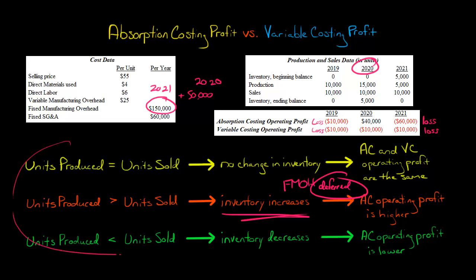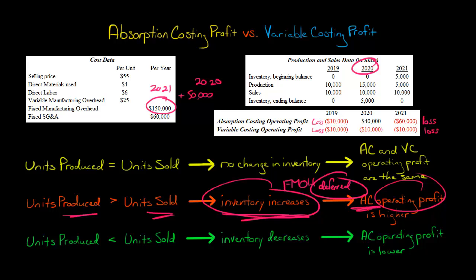If you just follow this chart, you'll have a good understanding. The key takeaway — if you can remember one thing — is that whenever you produce more than you sell, it actually creates a perverse incentive for managers to produce and build up inventory, because under absorption costing, operating profit would be higher since you're pushing some of the fixed manufacturing overhead costs to a future period instead of expensing them today, which is what would happen under variable costing.